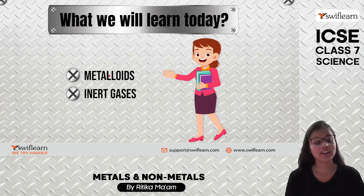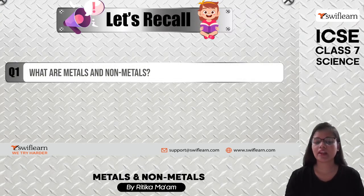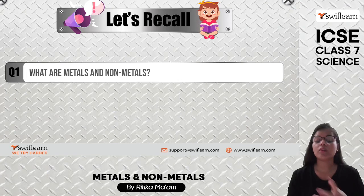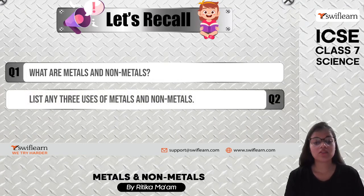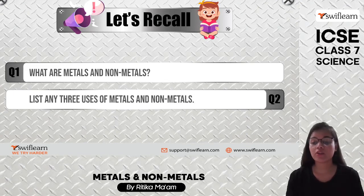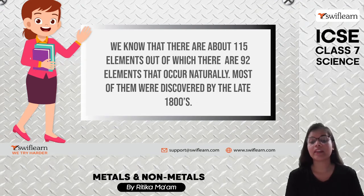In our last class, we studied metals, non-metals, and alloys. Metals have properties like being lustrous, malleable, and ductile. Non-metals are bad conductors of heat and electricity, non-malleable, non-ductile, and non-lustrous. Metals are used in making utensils, bridges (such as iron), and jewelry. Non-metals like nitrogen are used as fertilizers, oxygen is used for breathing, and graphite is used as a lubricant.